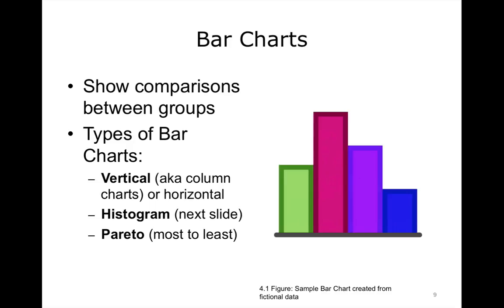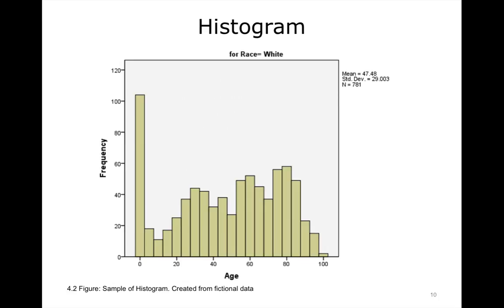We will start with bar charts, which are typically used to show comparisons between groups — groups of people, hospitals, providers, or physicians. Bar charts can be vertical (also known as column charts), horizontal, a histogram, or a Pareto chart where results go from most to least. A histogram example using false data shows the frequency of different ages where race equals white, and you can see the very young was the most frequent.